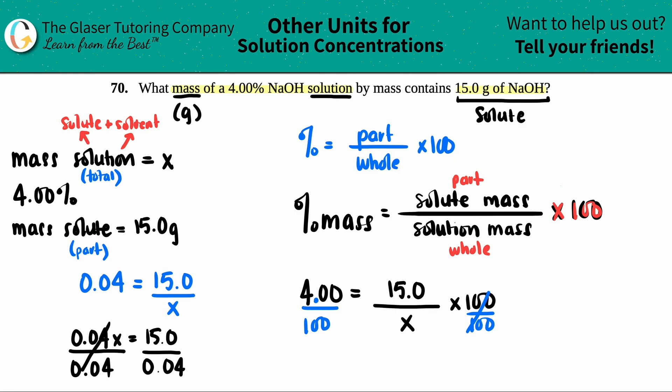For sig fig purposes, since all we did was multiply and divide, the total should have the least number of sig figs that are in one of the answers. But since both of these have three, my answer should have three sig figs. So this would be 375. And that's grams. And now we can say that was the mass of the solution. So this would be the answer.